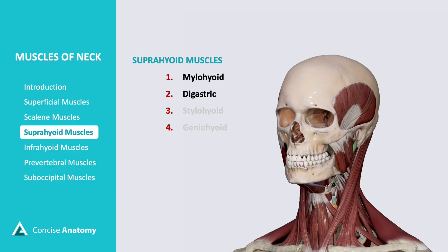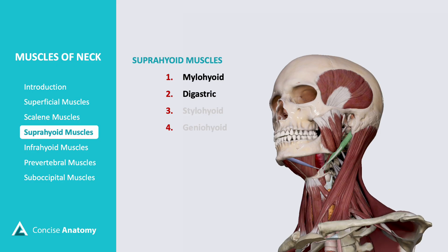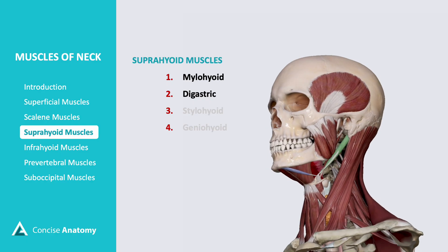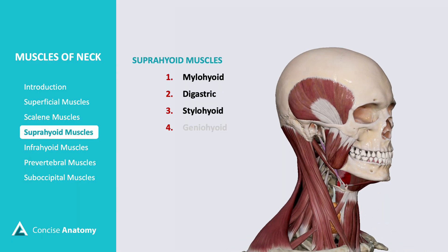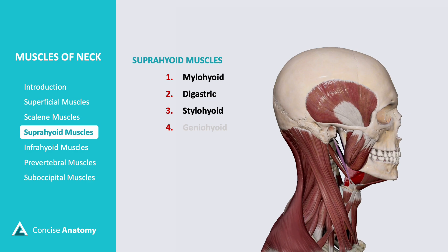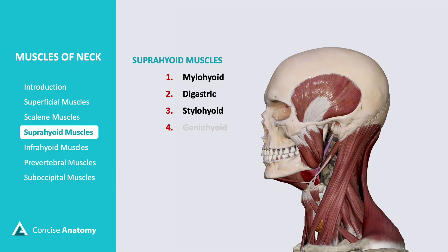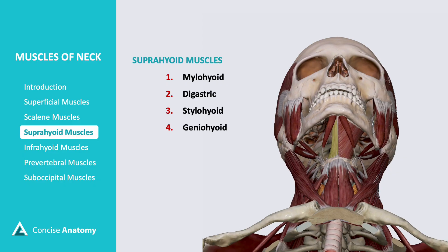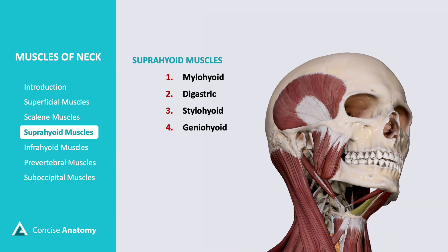Digastric consists of two bellies — anterior and posterior — connected by an intermediate tendon. It assists in depressing the mandible and elevating the hyoid bone. Stylohyoid extends from the styloid process to the hyoid bone and helps elevate and retract the hyoid during swallowing, and its tendon is pierced by the intermediate tendon of the digastric muscle near the hyoid bone. Geniohyoid runs from the genial tubercle of the mandible to the hyoid bone, aiding in jaw depression and hyoid elevation during swallowing.